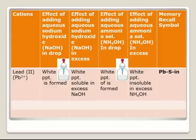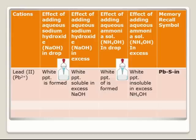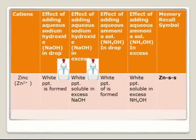Lead also forms a white precipitate with both sodium hydroxide and ammonium hydroxide. In excess sodium hydroxide, the white precipitate is soluble. In excess ammonium hydroxide, the white precipitate is insoluble. The recall symbol is PBSIN: PB stands for lead, which forms a white precipitate in both reagents; S stands for soluble in excess sodium hydroxide; IN stands for insoluble in excess ammonium hydroxide. So PBSIN gives you a recall for this test process.